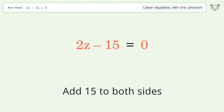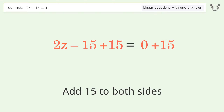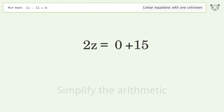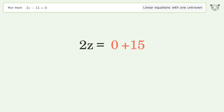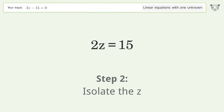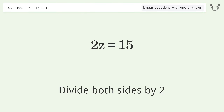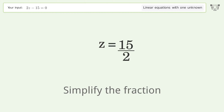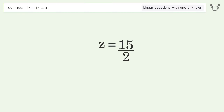Simplify the arithmetic. Isolate z by dividing both sides by 2, then simplify the fraction. The final result is z equals 15 over 2.